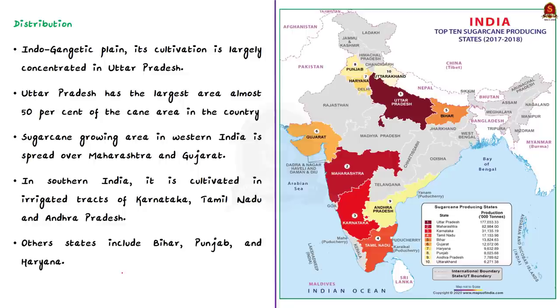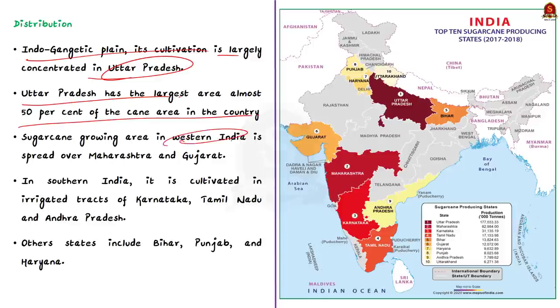Now let's see the distribution in India. In Indo-Gangetic Plain, its cultivation is largely concentrated in Uttar Pradesh and Uttar Pradesh has the largest area almost 50 percent of the cane area in the country. Sugarcane growing area in western India is spread over Maharashtra and Gujarat. In southern India, it is cultivated in irrigated tracts of Karnataka, Tamil Nadu and Andhra Pradesh. Other states includes Bihar, Punjab and Haryana. See this image. It shows the distribution of sugarcane production in the country.